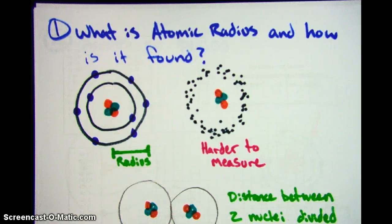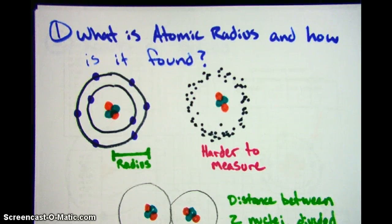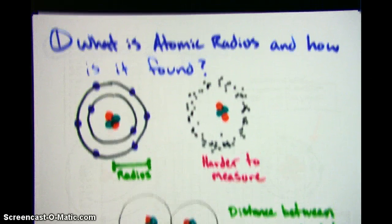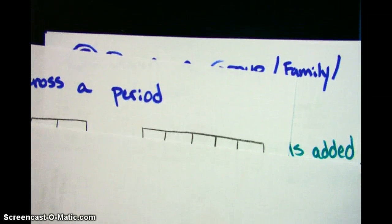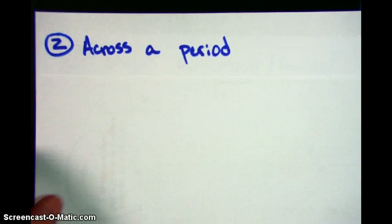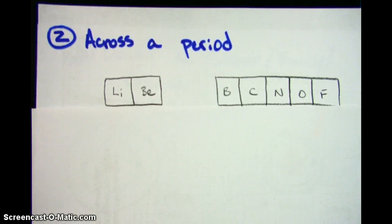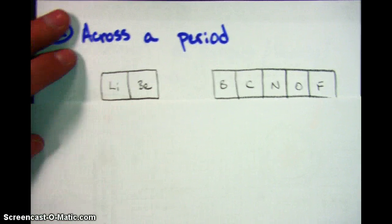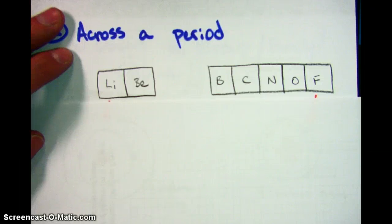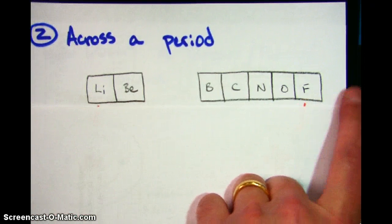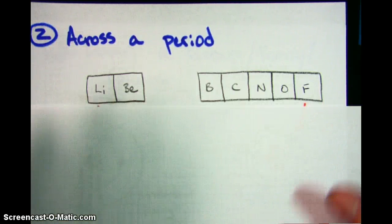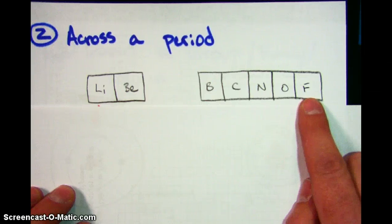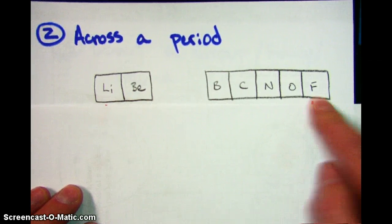The second question is: what happens as you move across a period? I've just grabbed the second row off the periodic table — the second period. It starts with lithium and goes all the way up to fluorine. I've left off the noble gas for this one because I just want to stick with these elements, because fluorine has a lot to do with something called electronegativity that we're going to talk about later.